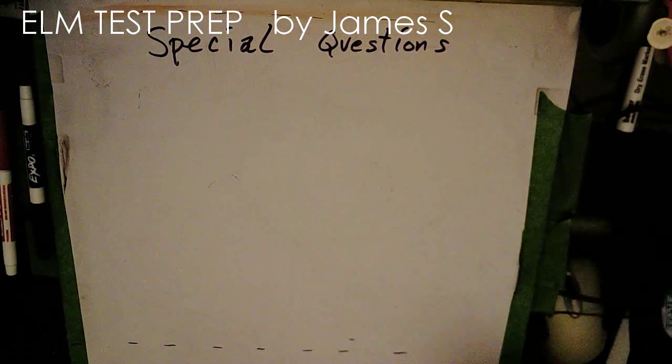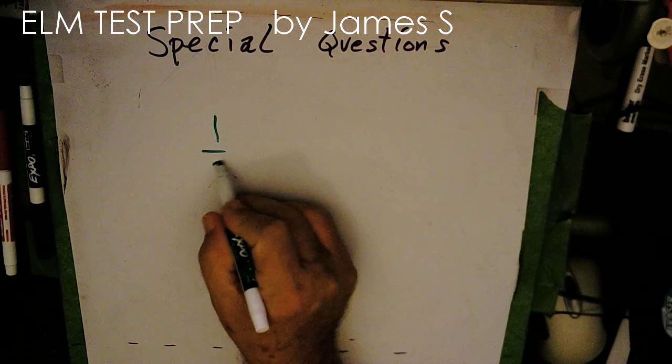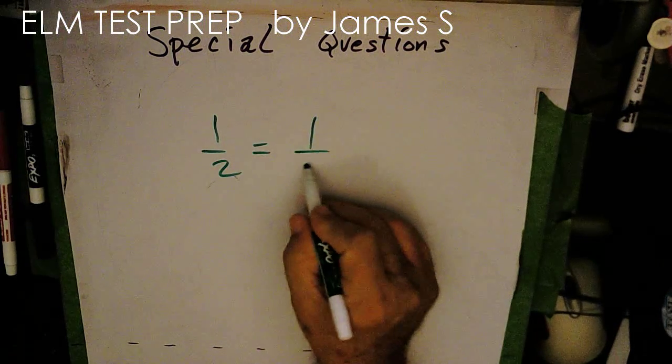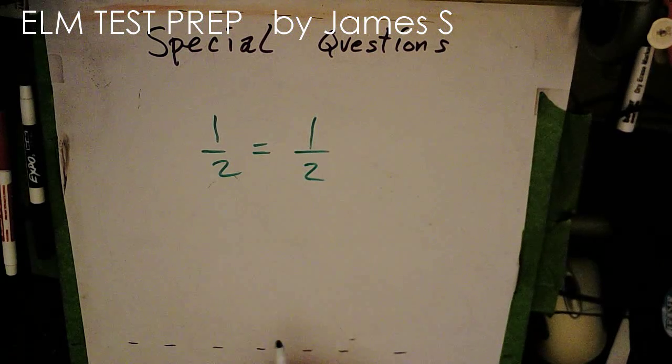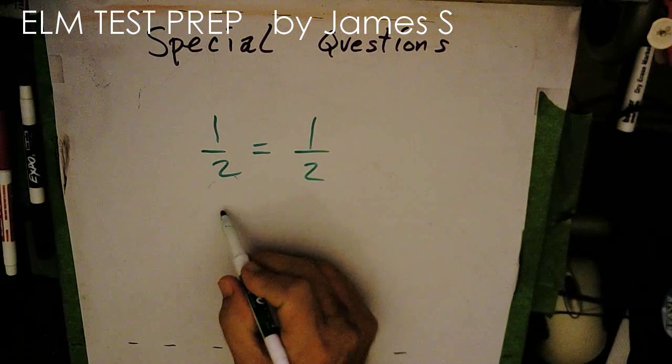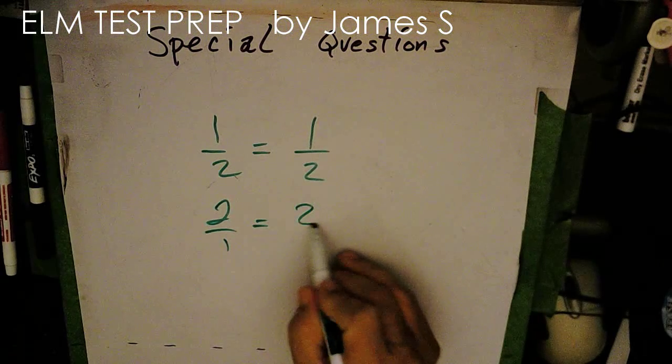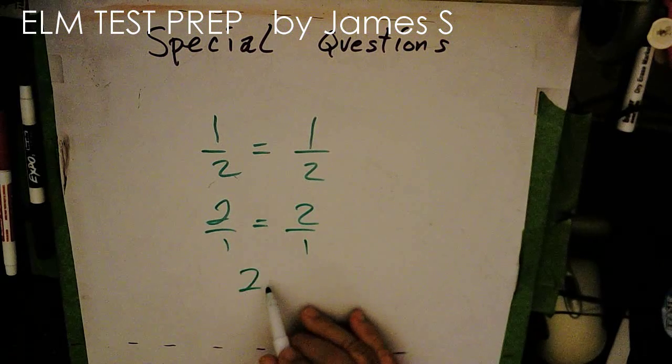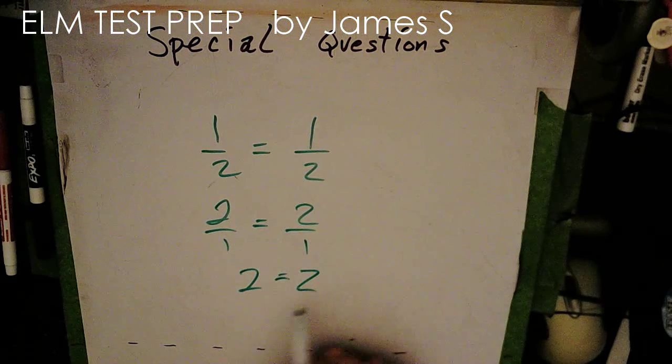Well, let's look and see if that's legal. 1 half equals 1 half. Well, that side equals that side. So if we flip both sides, 2 over 1 equals 2 over 1. So 2 equals 2. Well, that's true also.